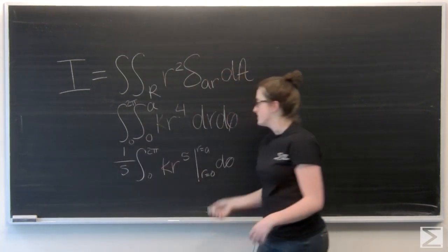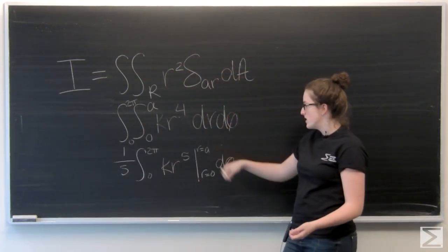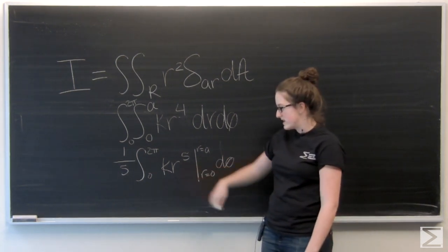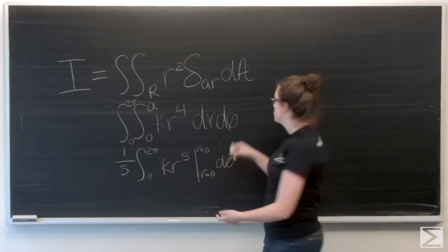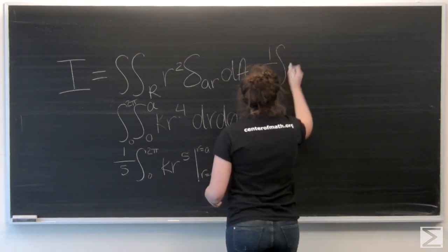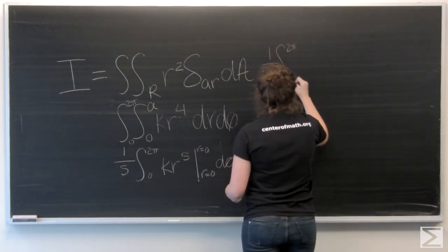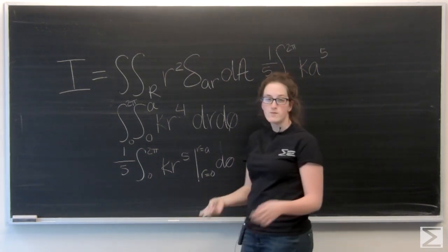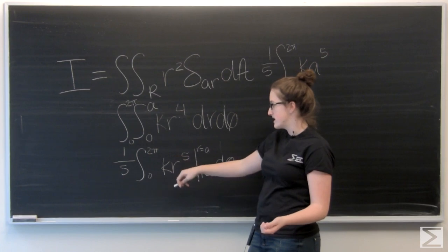Okay, let's go ahead and plug in. r equals a should be pretty easy. I'm going to get k a to the fifth. And then when I plug in r equals 0, I'm going to get 0.